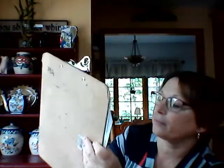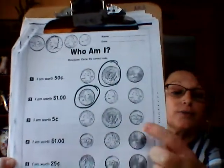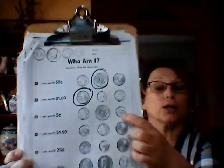Good job. Number two — I am worth a dollar. Is it the Sacagawea coin, a nickel, or a quarter? It is the Sacagawea coin — let's circle that. Number three — I am worth 5 cents. Is it the quarter, the half dollar, or the nickel? Which one of these is worth 5 cents? If you guessed the last coin, which is the nickel, you are correct.